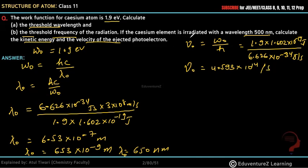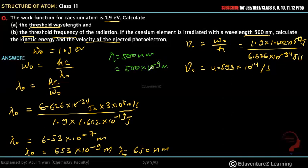Now it says the cesium element is irradiated with wavelength 500 nanometers. The given wavelength λ = 500 nm, which in meters is 500 × 10⁻⁹ meters. We are asked to calculate the kinetic energy using this incident wavelength.